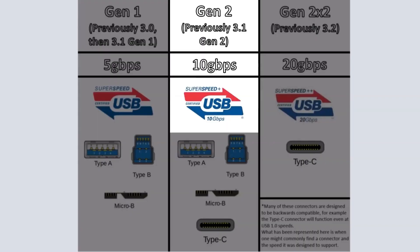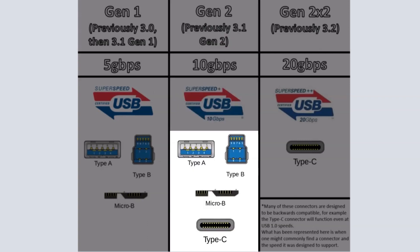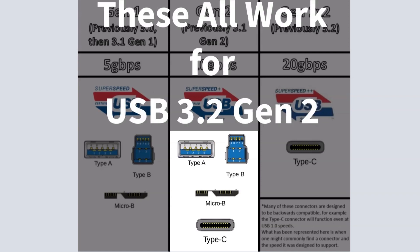Next we go to SuperSpeed Plus. The SuperSpeed Plus specification means instead of operating at 5 gigabits per second, we can now go up to 10 gigabits per second — 10 billion bits per second. This is USB 3.2 Gen 2. It can be operated through your typical Type-A connector with a blue indicator, Type-B connector, the Micro-B connector, and also the USB Type-C connector. You can use any of these connectors to carry up to 10 gigabits per second for USB 3.2 Gen 2.